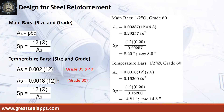The area of steel for main bars is 0.29257 square inches, and the spacing for a half-inch diameter bar is 8 inches on center. The area of steel for temperature bars is 0.162 square inches, and the spacing for a half-inch diameter bar is 14.5 inches on center.